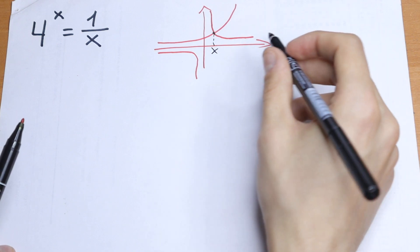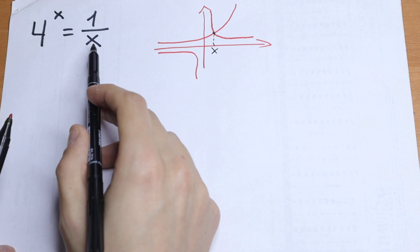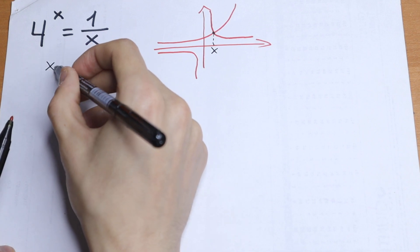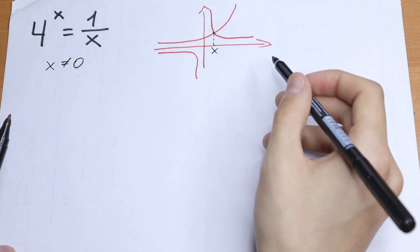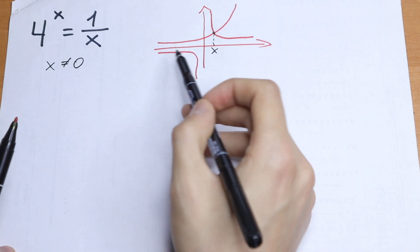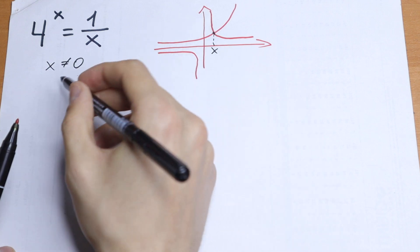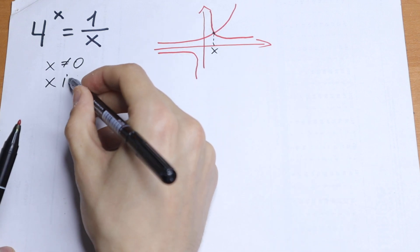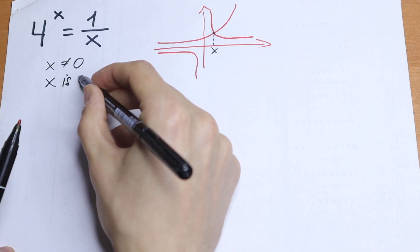So of course x is not equal to 0 because we have x right here in our denominator. Secondly, x is greater than 0 because right here we do not have our point of intersection.